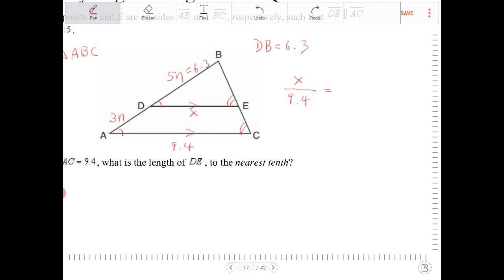The segment DB has 5N. Let's say I don't know 6.3. I want to say it's 5N. And then AB, the overall segment, will be 8N. So, look what happens to the Ns. They cancel. So, I have X over 9.4 is equal to 5 eighths.